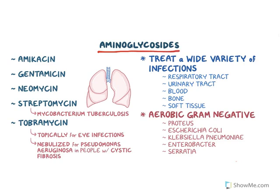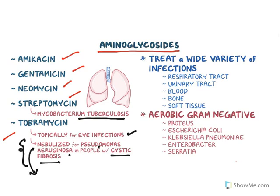There are many aminoglycoside derivatives: amikacin, gentamicin, neomycin, streptomycin, tobramycin. Streptomycin is specifically used to treat TB (Mycobacterium tuberculosis), and tobramycin is topically used to treat eye infections; its nebulized form is used to treat Pseudomonas aeruginosa in people with cystic fibrosis, minimizing adverse effects. They are used to treat a variety of infections including respiratory tract, urinary tract, blood, bone, and soft tissue infections.